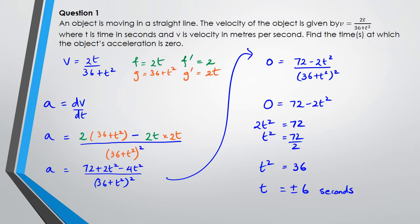We know the object is moving in a straight line, and the question says 'find the times.' Looking at the answer schedule, they accept t equals 6 as well. To be safe, I'll put t equals plus or minus 6 seconds. Let's go to the next question.